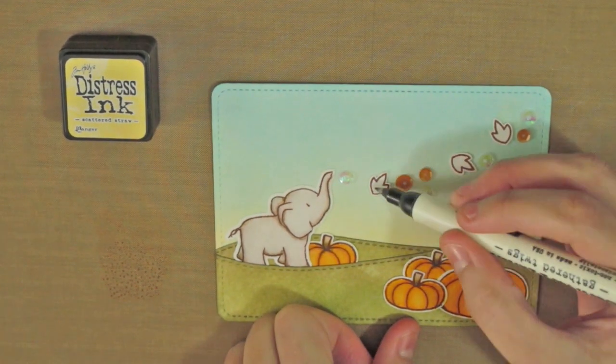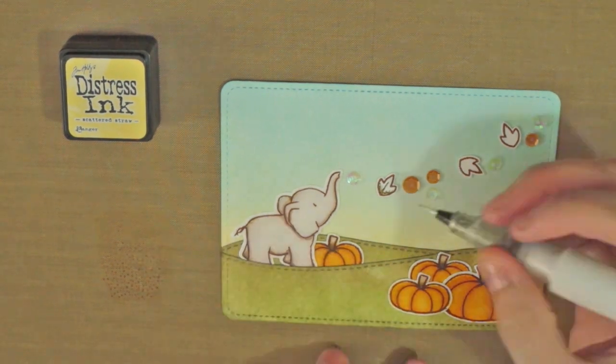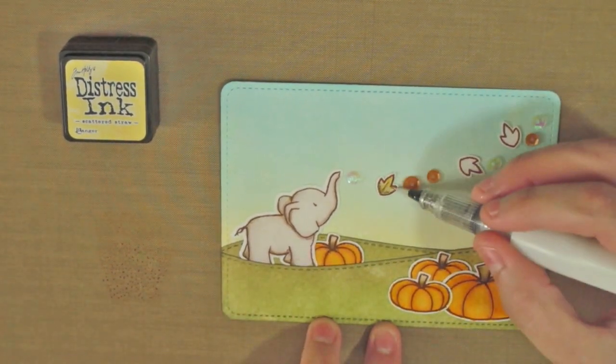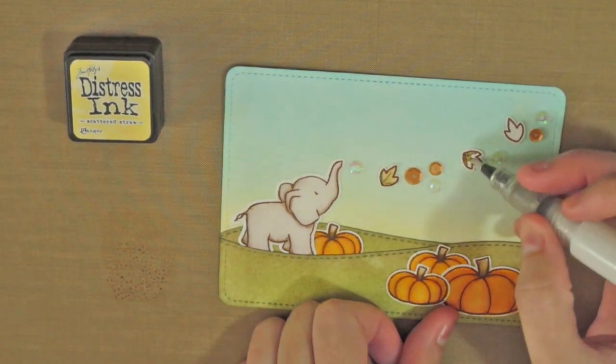Now I will add some gathered twigs to the leaves and will blend it with my scattered straw and my wink of Stella in clear. This will blend the colors together as well as add some shimmer.